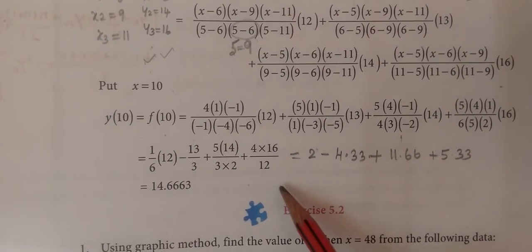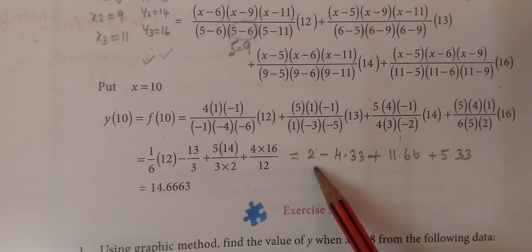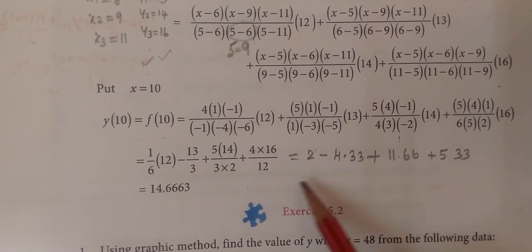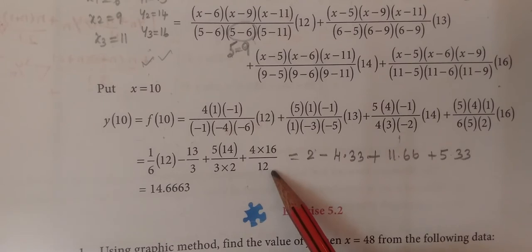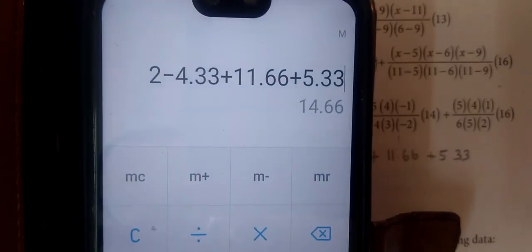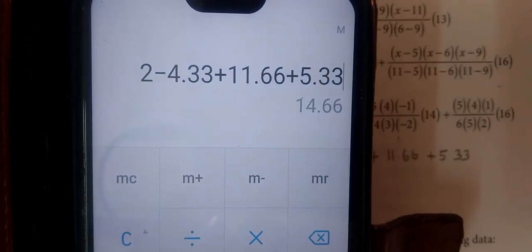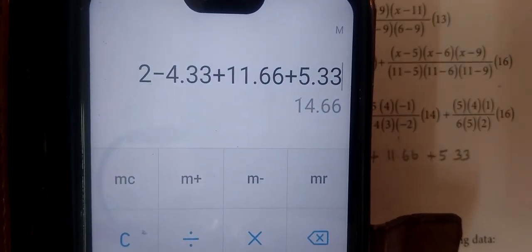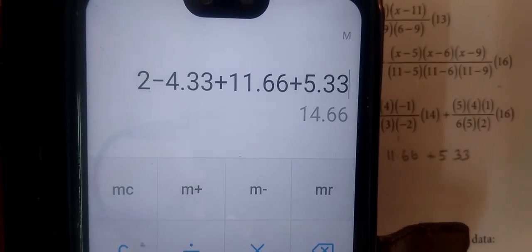This is just mere calculation. This is decimal. Take the LCM. It's very easy to find the answer. This decimal is 14.663. So this is negative 4.33 plus 11.66 plus 5.33 equal to 14.63.